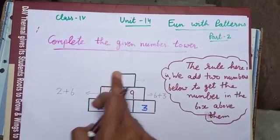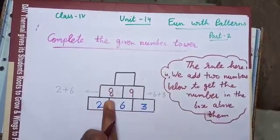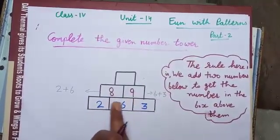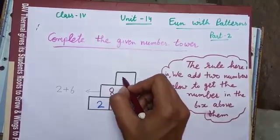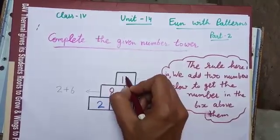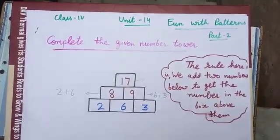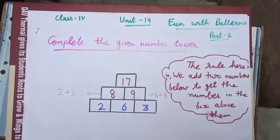To fill this box I will add 8 and 9. 8 plus 9, 17. In this way we can complete the number tower.